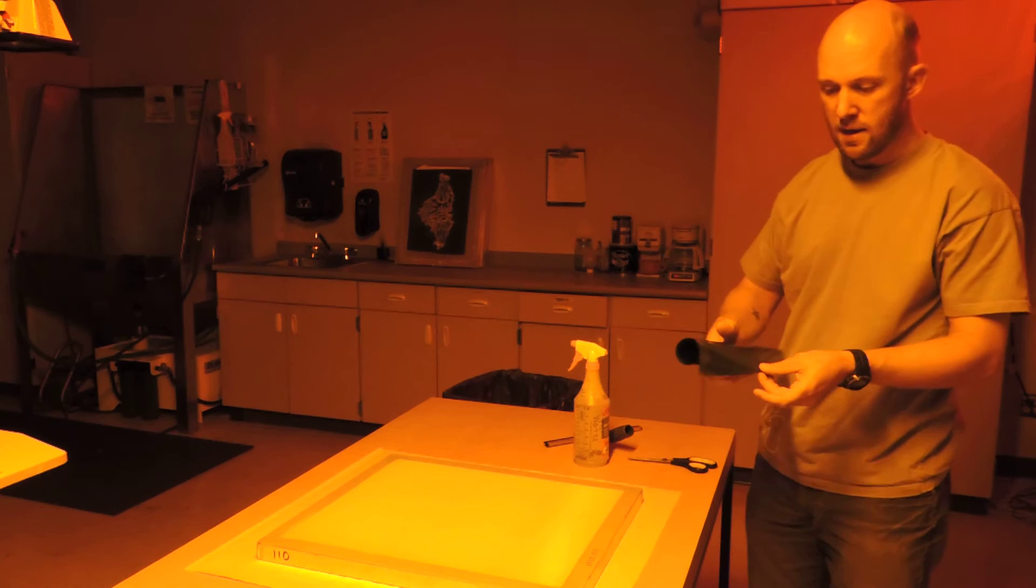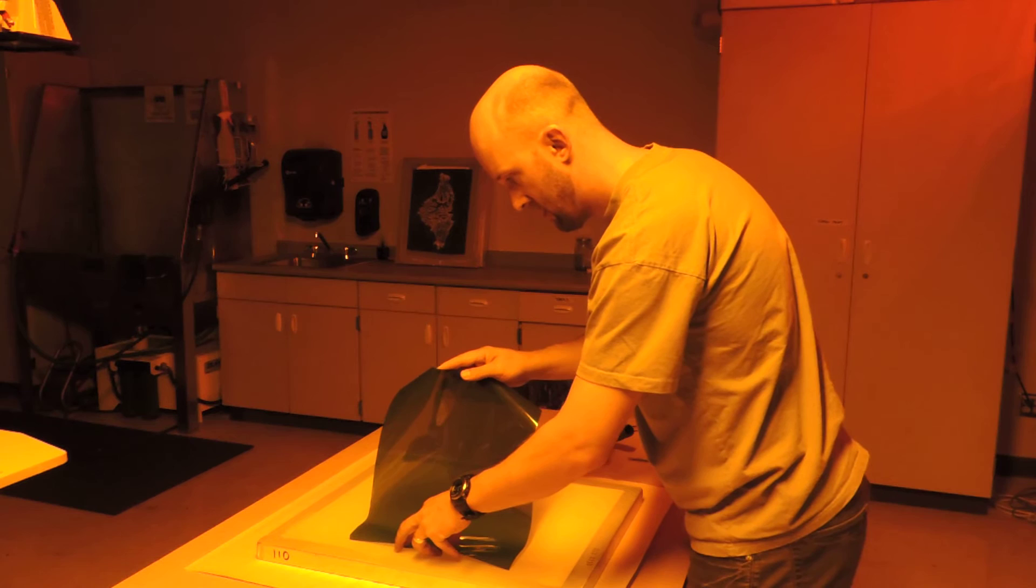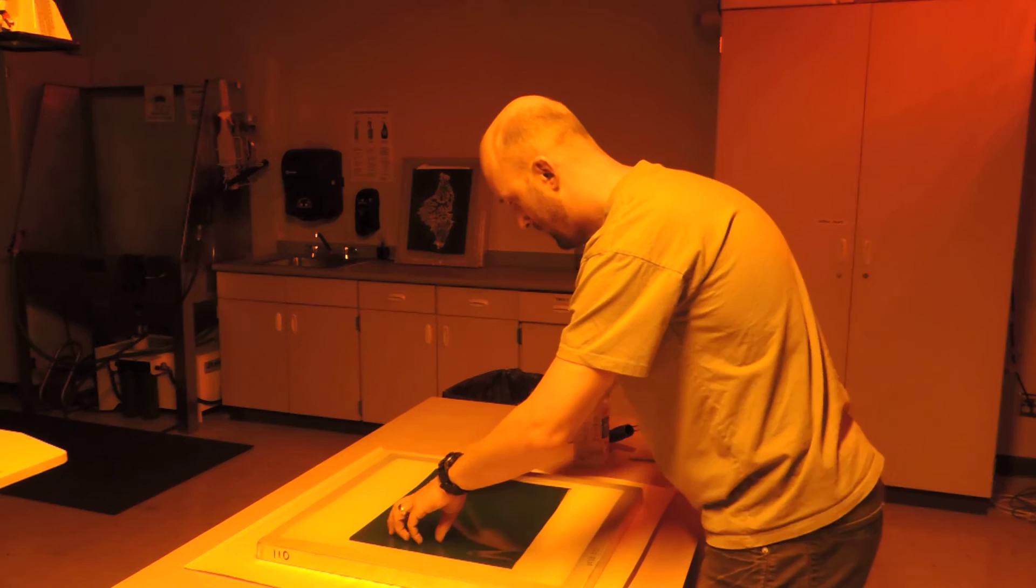Now once that is on there I can take my emulsion and I know that I want to have this in the center of the screen so I am going to try to get that in the center as best as possible. Just by laying down on the side one corner and then just draping it across.